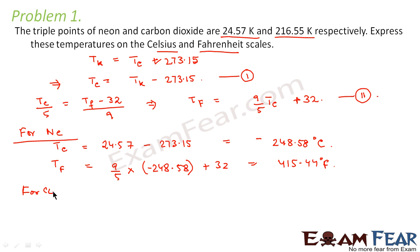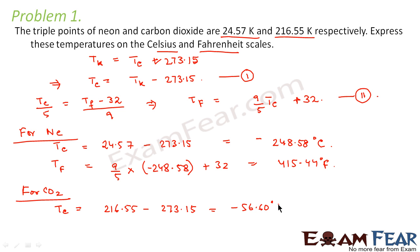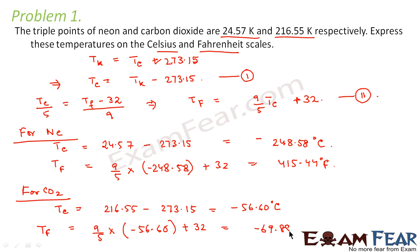So this was all about neon. Now for carbon dioxide, Tc will be equal to 216.55 minus 273.15, which comes out to be −56.60 degrees Celsius. So these are the temperatures in Celsius and Fahrenheit scale.